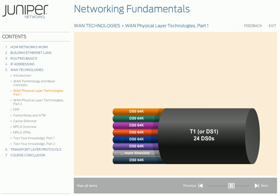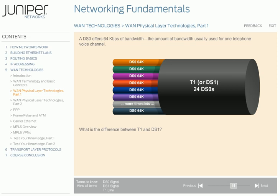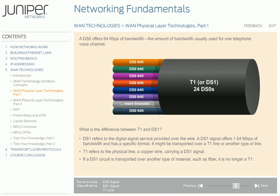Each of the time slots can also be referred to as a DS0. DS0 is the basic digital signaling rate. DS stands for digital signal, and is a system of classifying digital circuits according to the rate and format of the signal. A DS0 offers 64 kilobits per second of bandwidth, the amount usually used for one telephone voice channel. A DS1 circuit is made up of 24 DS0s. You'll often hear people use the terms T1 and DS1 interchangeably, but technically they're not the same. The term DS1 refers to the digital signal service provided over the wire at 1.54 megabits per second. The term T1 refers to the physical line, which is copper wire carrying a DS1 signal. If a DS1 circuit is transported over another type of material, such as fiber, it is no longer a T1.